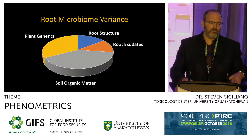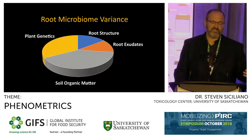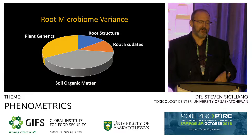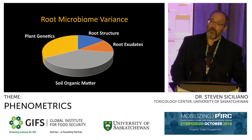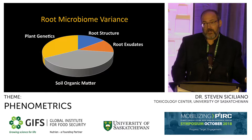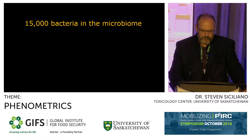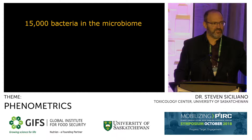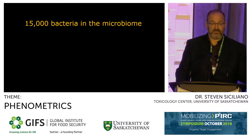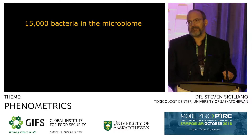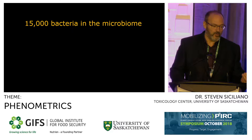Looking at the root microbiome variance explaining about 55%: we've got about 15% from root structure and exudates, about 22% from soil organic matter, and about 18% from what I'll call plant genetics—an unknown plant pathway we're not currently measuring but linked to differences between these 16 lines. The microbiome does differ between lines and over half the variance can be explained, but with 15,000 bacteria in the microbiome, what's changing is still the question.